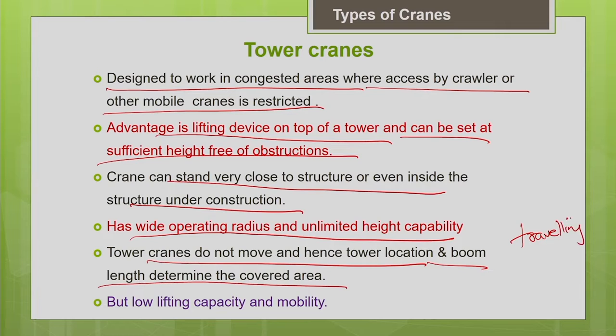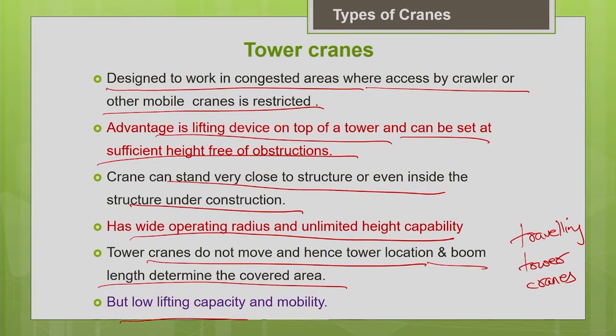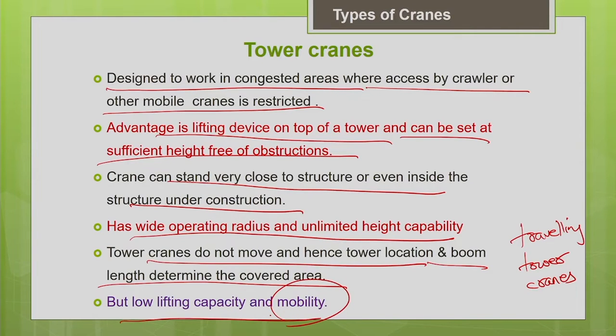Other than static tower cranes, there are also travelling tower cranes — crawler mounted or rail mounted. Where mobility is needed at a project site, a rail track can be laid for the tower crane to move along, which can reduce the cost of erection and dismantling. The demerit is low lifting capacity compared to mobile cranes, and mobility is mostly limited.